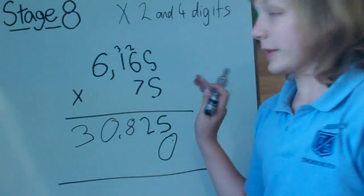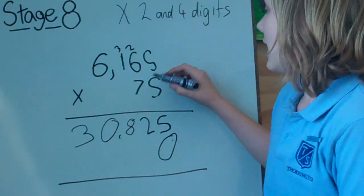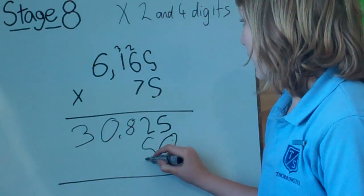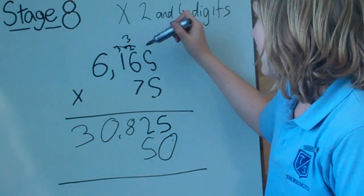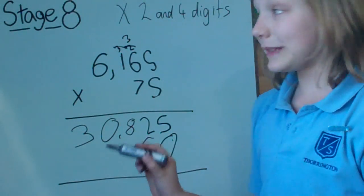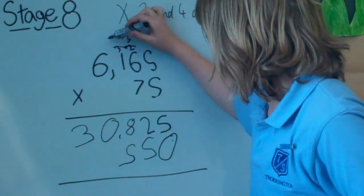Now we add a 0 because we're going to multiply the 10s. 7 times 5 is 35, and carry the 3. 6 times 7 is 42, plus 3 is 45, carry the 4.